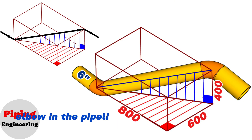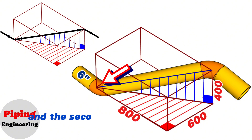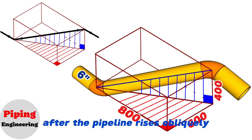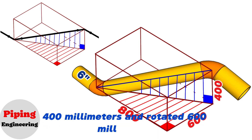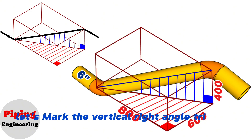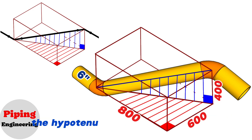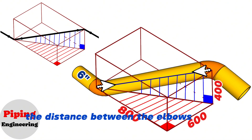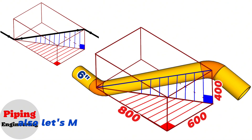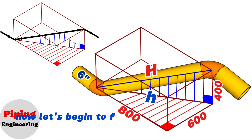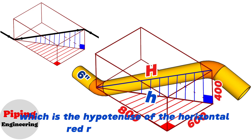The first elbow in the pipeline is located in the lower right corner of the parallelogram and the second elbow is located in the upper left corner. Two right triangles are formed with dashed lines after the pipeline rises obliquely 400mm and rotates 600mm. Let's mark the vertical right-angle triangle with blue color and the horizontal right-angle triangle with red color. The hypotenuse of the vertical blue right-angle triangle is the distance between the elbows. Let's mark it with big letter H and the hypotenuse of the red right-angle triangle with small letter h.